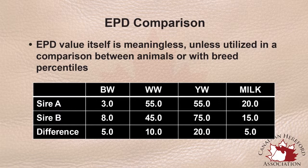Therefore, we would expect the calves or the progeny of sire A to be 10 pounds heavier on the average at weaning than what we'd expect for sire B. That basically shows that there's going to be a large difference in performance values, and accordingly there will be differences in the weights of those cattle and the profitability or revenue generated by those cattle due to being heavier at weaning.